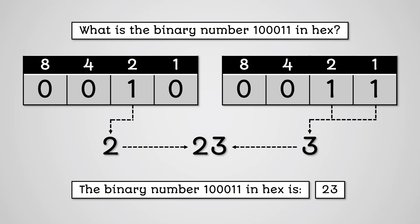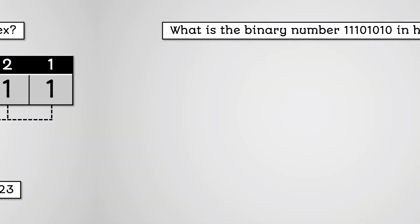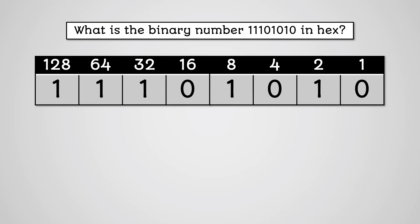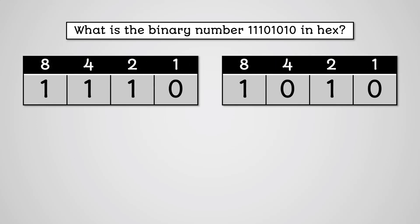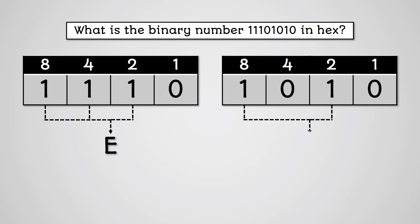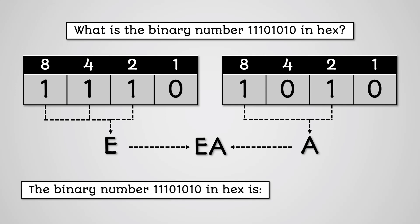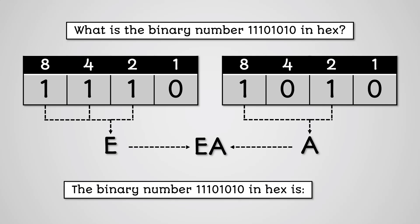Remember, that's 2 3, not twenty-three. Let's try another example. Consider the number 11101010. This is already 8 bits, so we can straight away split it into 2 nibbles. The first number is equal to 14, which in hexadecimal is E. The second number is equal to 10, which in hexadecimal is A. Combining these gives us EA. So the binary number 11101010 in hexadecimal is EA.